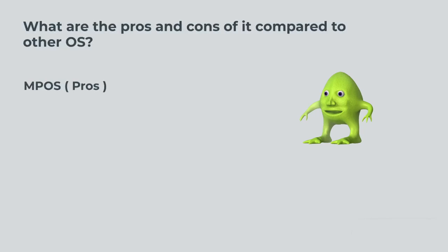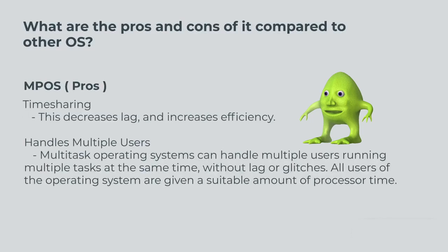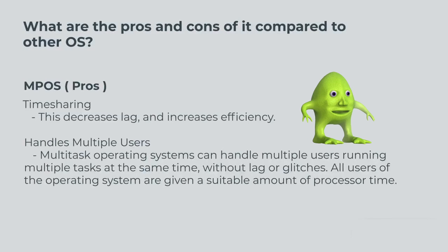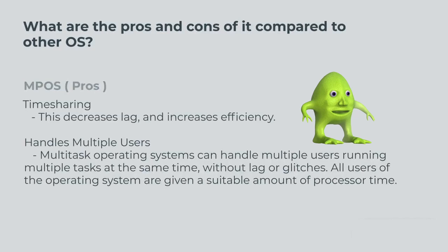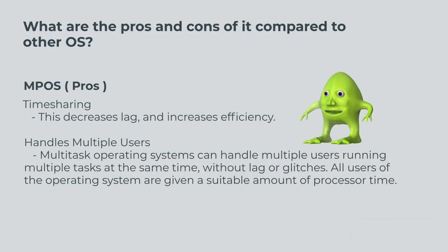Multiprocessing OS pros: time sharing. This decreases lag and increases efficiency. Multitasking operating systems can handle multiple users running multiple tasks at the same time without lag or glitches. All users of the operating system are given a suitable amount of processor time.